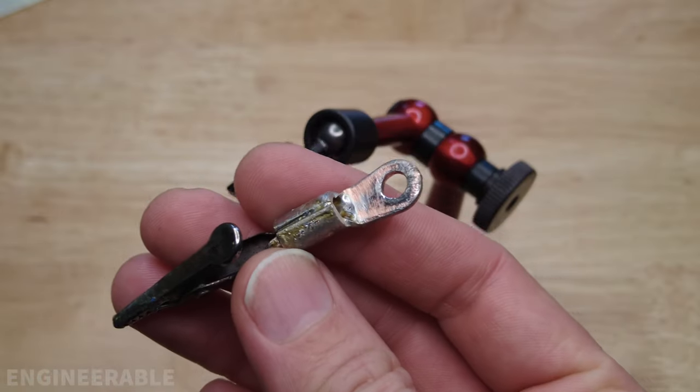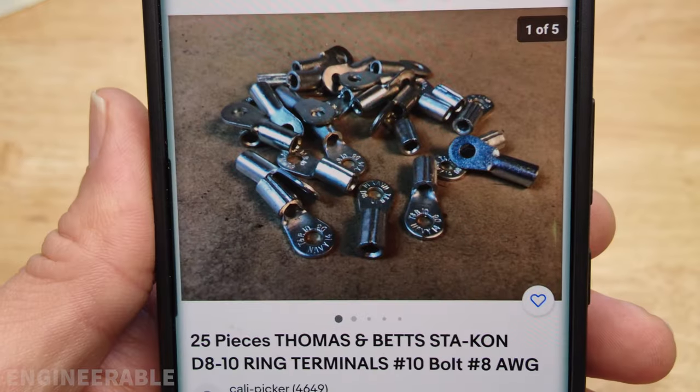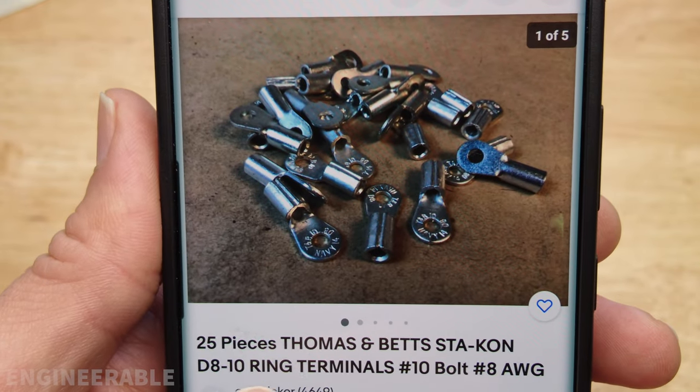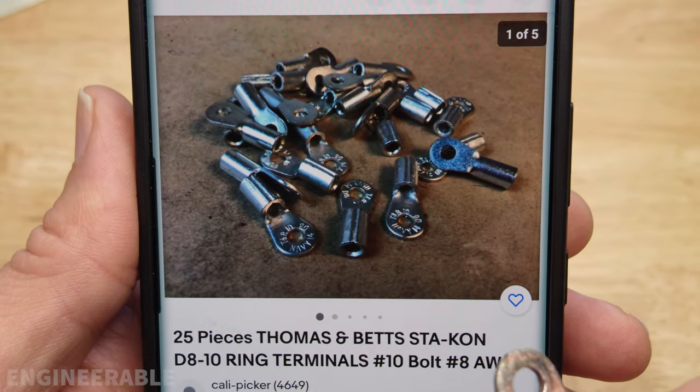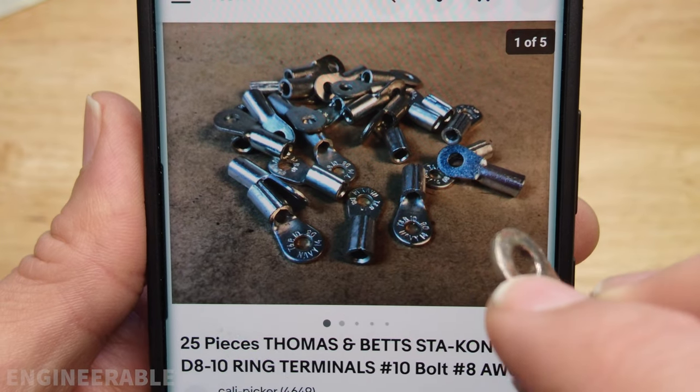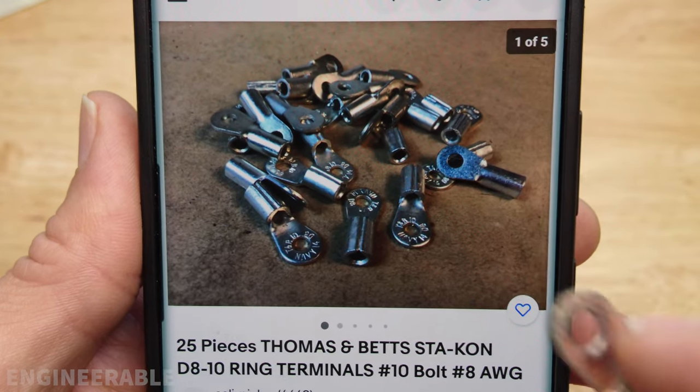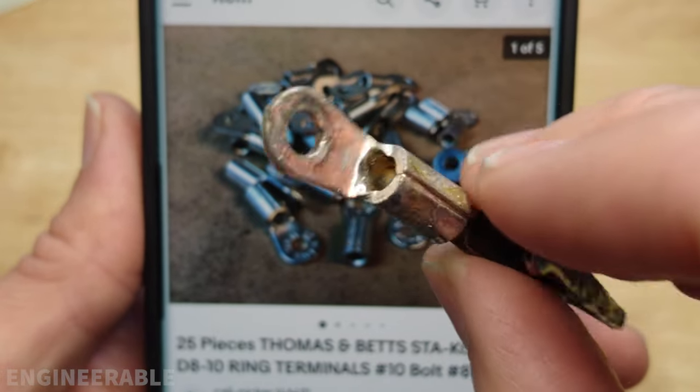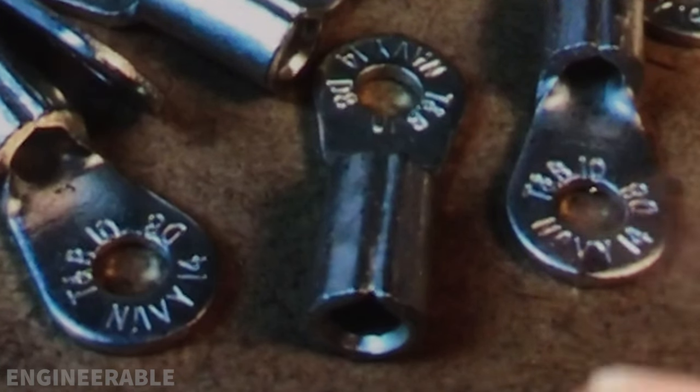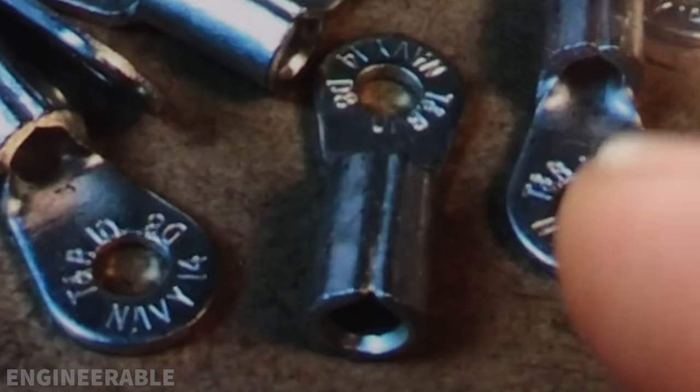This ring terminal that I used here is a Thomas and Betts D8-10 ring terminal, which means it's designed to fit a number 10 bolt through this hole, which measures about 0.1875 inches, and it's made for 8 gauge wire. The markings on the terminal said Navy 14 D8-10.